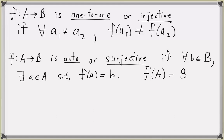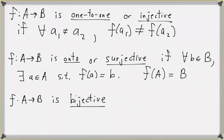Function F from A to B is called onto or surjective if for every element b in set B, there exists an element a in set A such that F of a equals b. So every element of B shows up as a second coordinate of an ordered pair. If a function is both one-to-one and onto, we say that F is bijective — F is a bijection if it is one-to-one and onto.